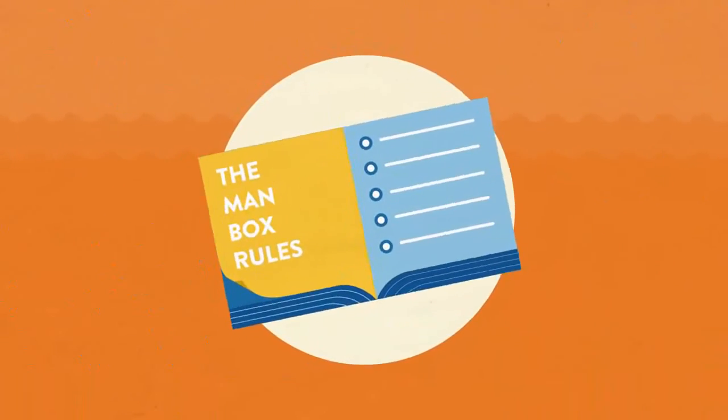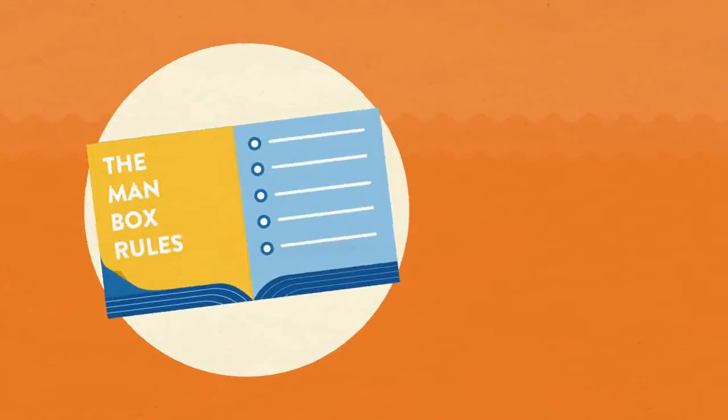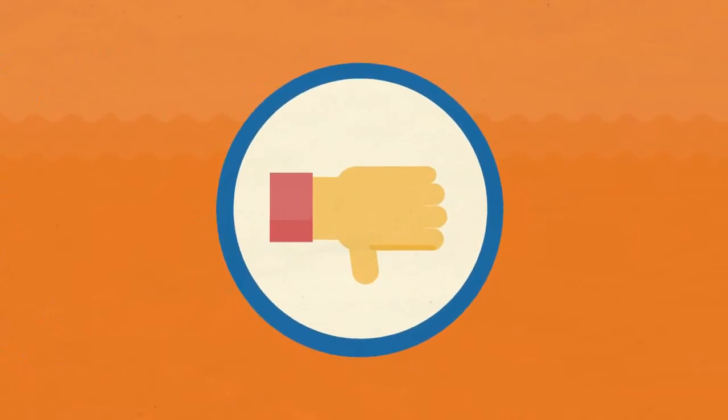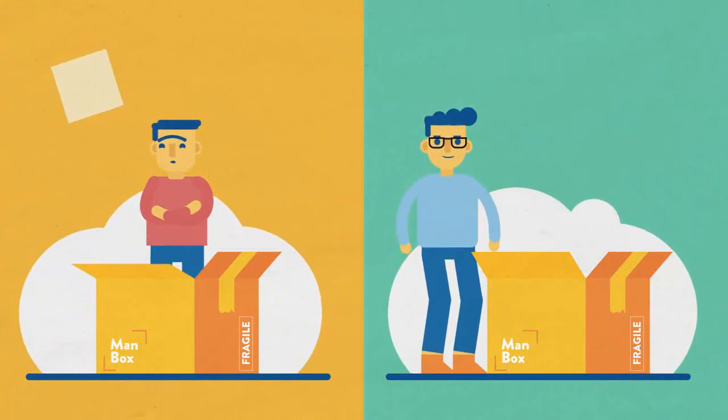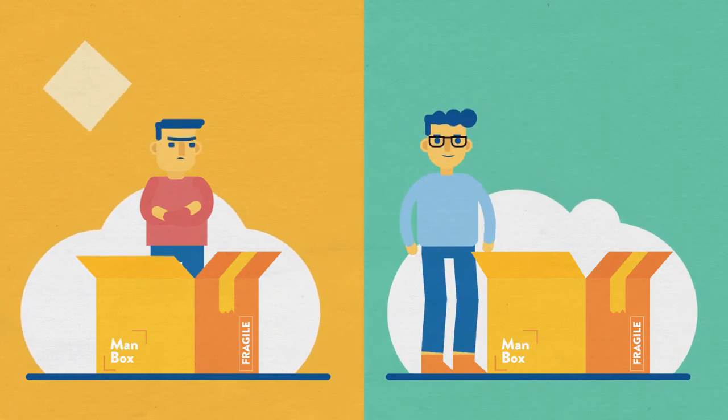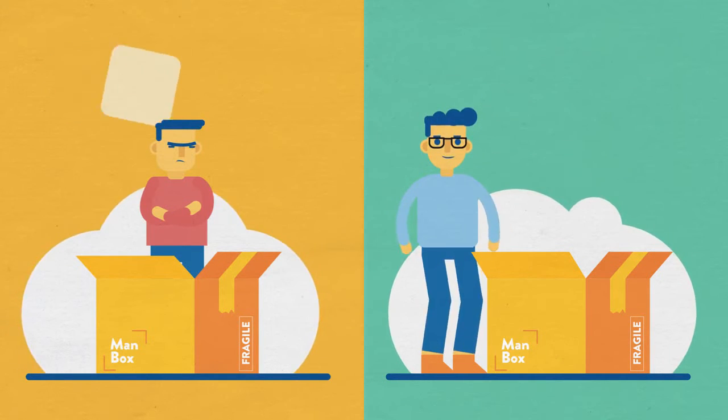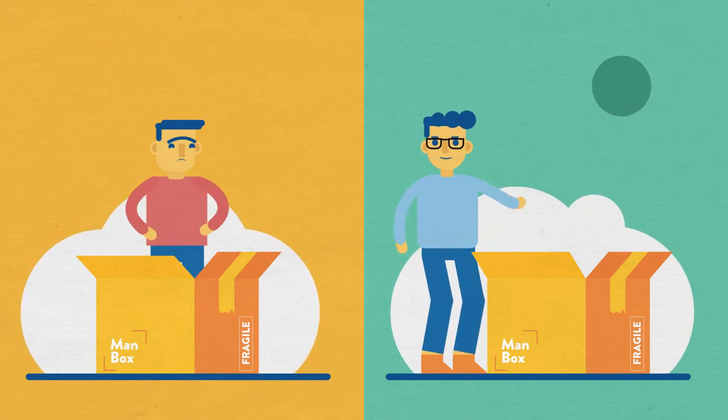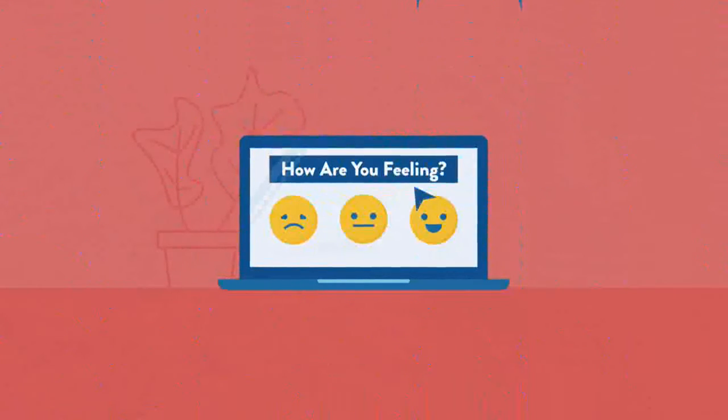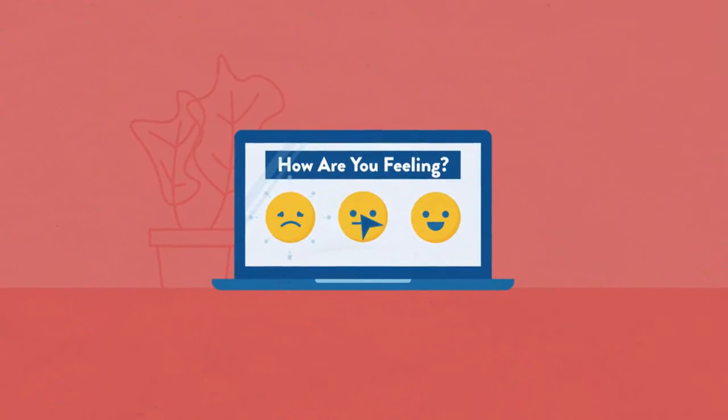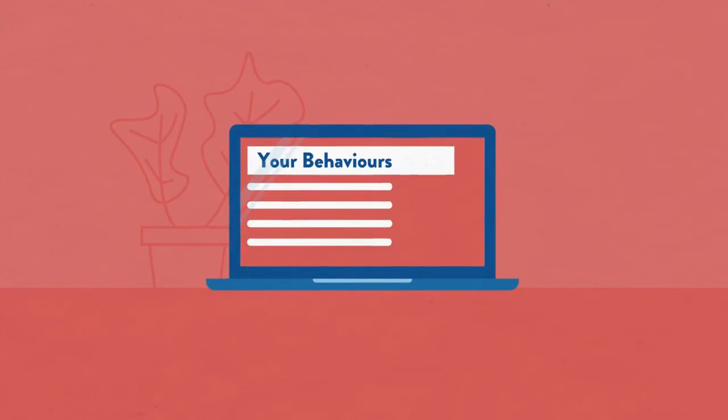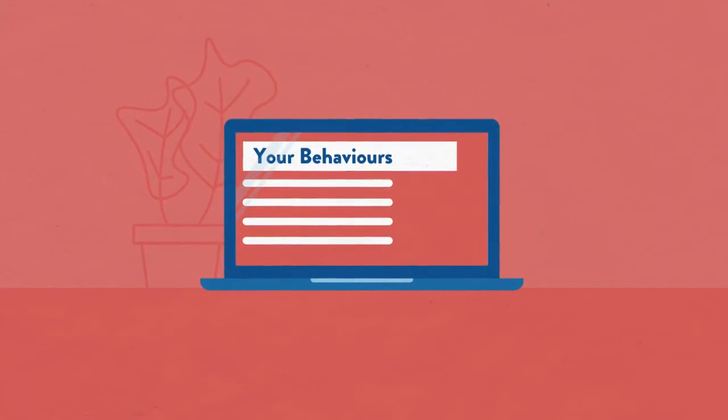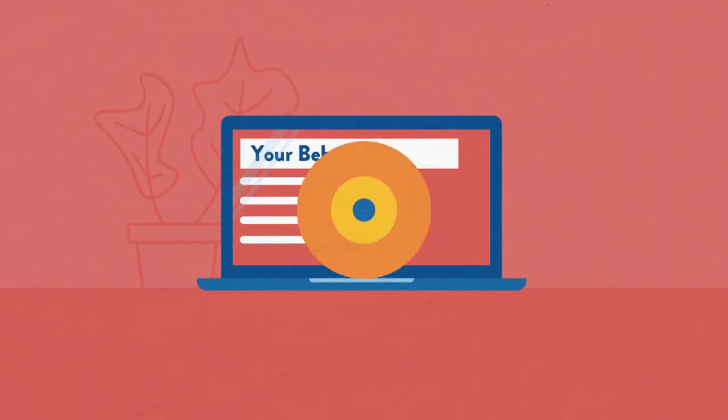Adhering to these rigid norms and stereotypes that make up the man box can be unhealthy and harmful. Young men inside the man box are those who more strongly believe in the man box rules. Compared to young men who are outside of the man box, these young men report poorer mental health and have a variety of behavioral issues that are harmful for them and others, particularly women. For example: